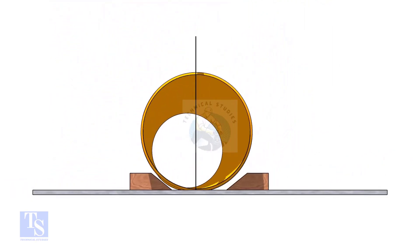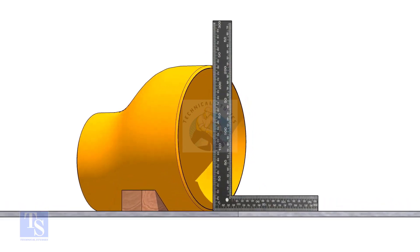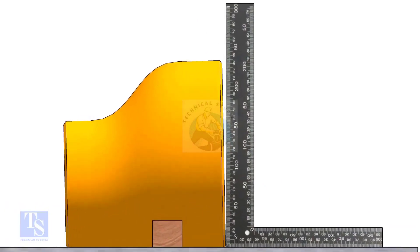Put the reducer on a level plate and check the squareness with a right angle. You will see a gap between the right angle and the reducer.